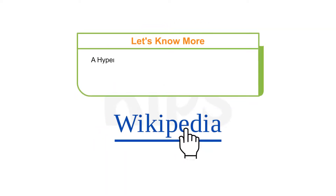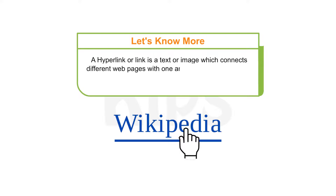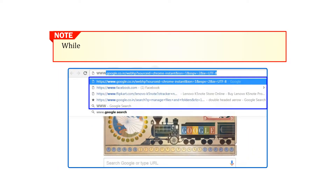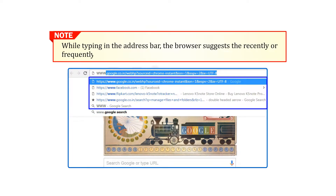A hyperlink or link is a text or image which connects different web pages with one another. When the mouse pointer is placed on a hyperlink, the cursor changes into a hand icon. Note that while typing in the address bar, the browser suggests recently or frequently visited websites.